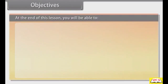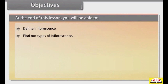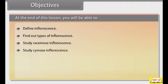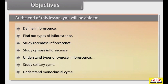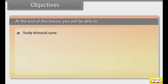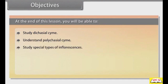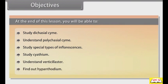At the end of this lesson you will be able to: define inflorescence, find out types of inflorescence, study racemose inflorescence, study cymose inflorescence, understand types of cymose inflorescence, study solitary cyme, understand monochasial cyme, study dichasial cyme, understand polychasial cyme, study special types of inflorescences, study cyathium, understand verticillaster, and find out hypanthodium.